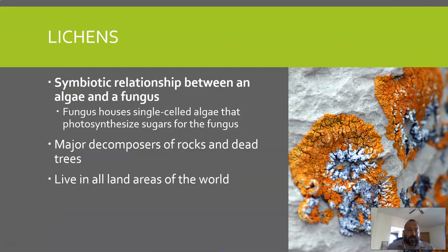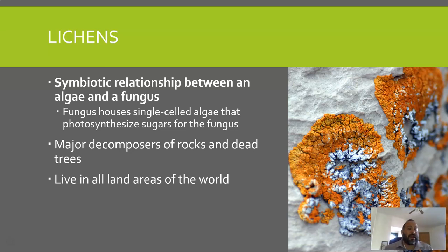Lichens are a symbiotic relationship between algae and fungi: the fungus houses the single-celled algae, and the algae photosynthesizes sugars for the fungus in return. Lichens are major decomposers of rocks and dead trees and are one of the first organisms to appear in primary succession. When there is no soil, lichens can settle on bare rock and begin the decomposition process that starts soil formation. They can be found in all land areas of the world.